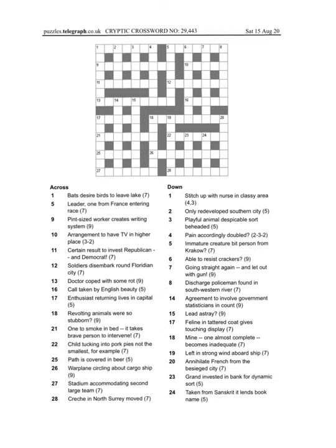Hi, this is the walkthrough of the Telegraph Prize crossword from Saturday the 15th of August, number 29,443.